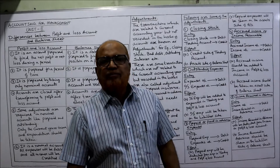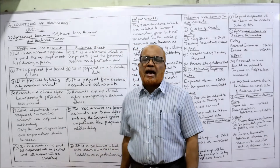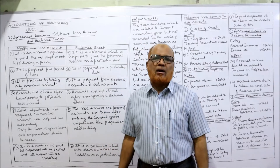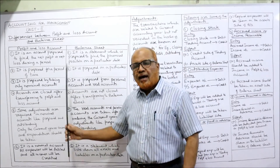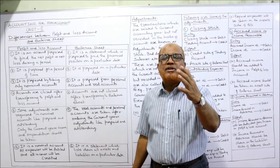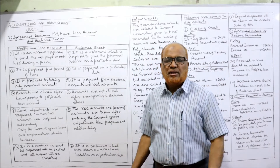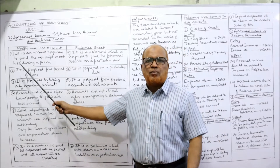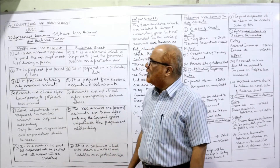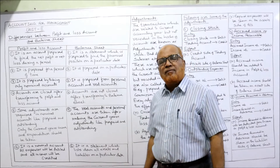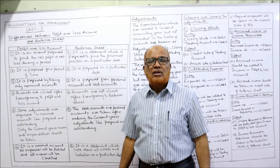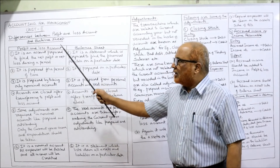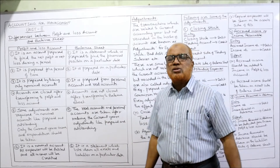Now, first of all, the differences between profit and loss account and balance sheet. Profit and loss account is normally also called the revenue account, while balance sheet is a statement of financial position — these are the new names, but traditionally we call them profit and loss account and balance sheet. There are many differences: the purpose is different, the format is different.